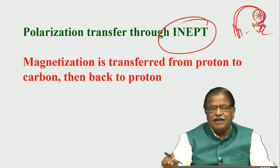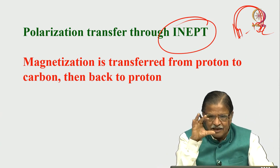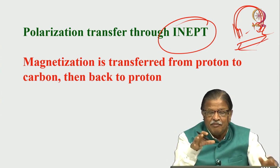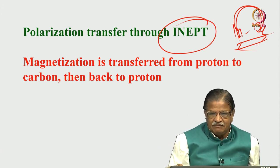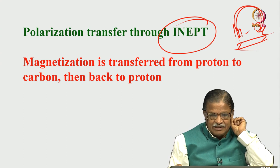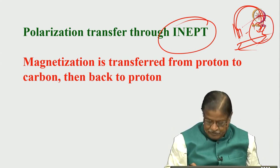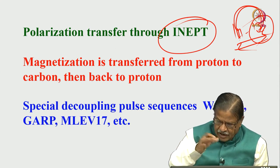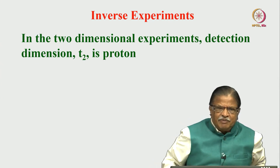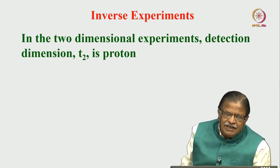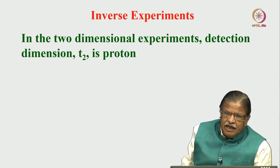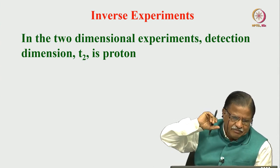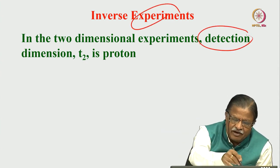By transferring magnetization from proton to carbon and back to proton again, we are directly detecting proton — the high-sensitivity nucleus — while also gaining information about carbon-13. This is the advantage: we save experimental time while still getting dilute spin information. Decoupled and coupled versions of inverse experiments are all possible. In the 2D inverse experiment, the detection dimension is always proton because that is the sensitive nucleus. Detecting carbon-13 directly would not be an inverse experiment — it would be like HETCOR, taking much more time.